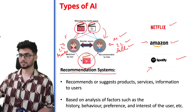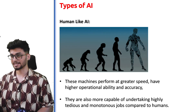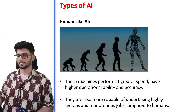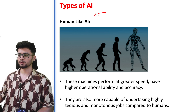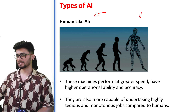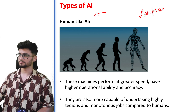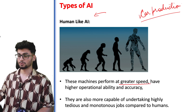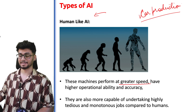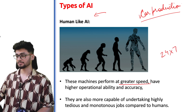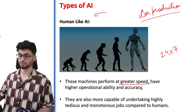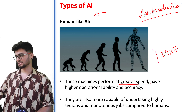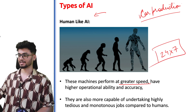Another type of AI is human-like AI. These systems perform at very good speed — they can work day and night, 24/7. Their accuracy is very good, and since they can work continuously, they are better than humans at doing monotonous jobs.